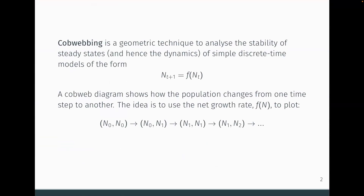So what is cobwebbing? It's a technique we can use to analyze the stability of these models. Previously we used an algebraic approach, assuming we can neglect higher-order nonlinear terms and zoom in close to our steady states — because zoomed in enough, everything looks linear. Here, we set up a diagram where we move around based on population size and our updating function.